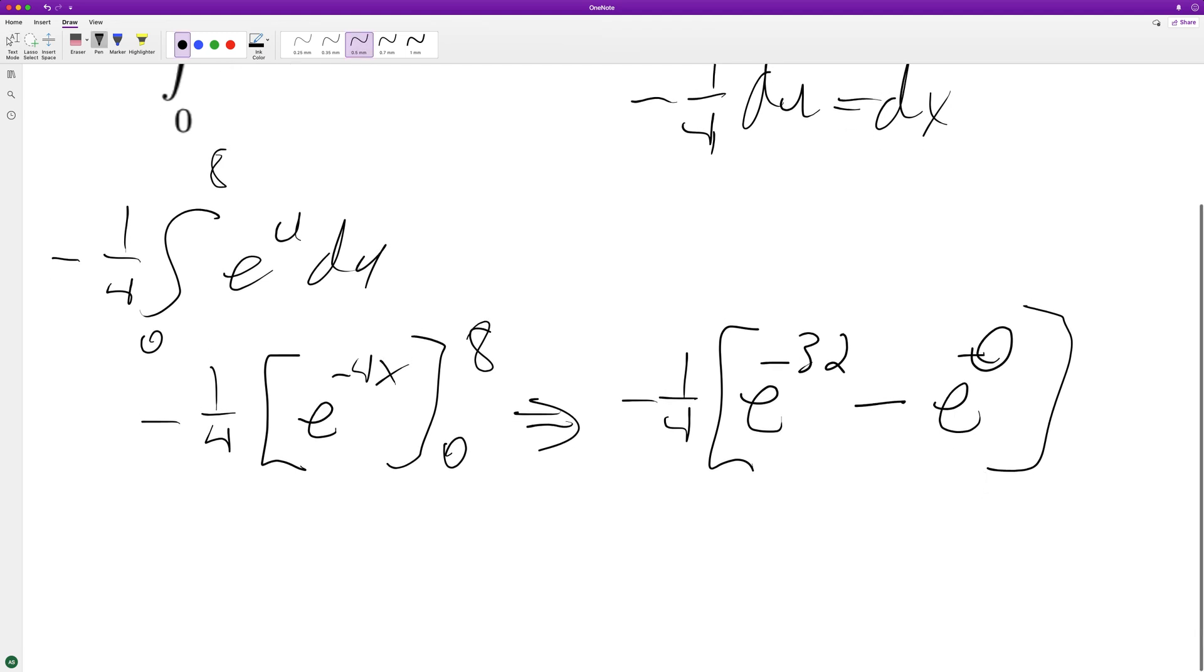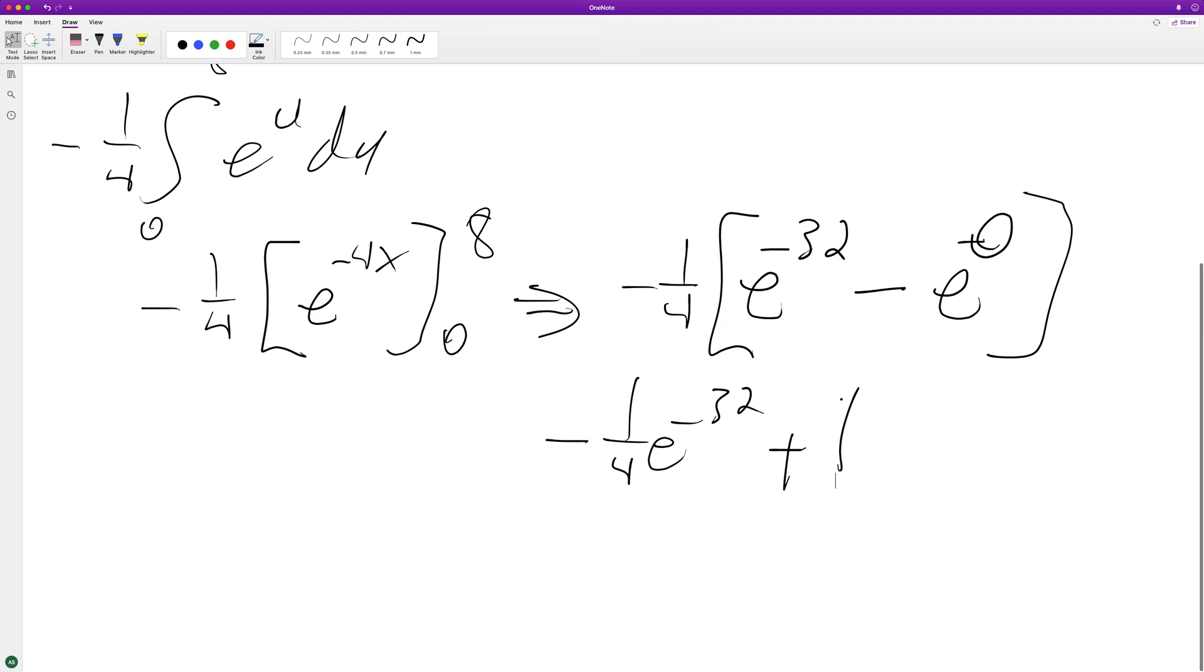So this becomes negative 1 fourth, e raised to the negative 32, minus, plus 1. And if you want the positives leading first, you get 1 minus 1 fourth, e raised to the negative 32.